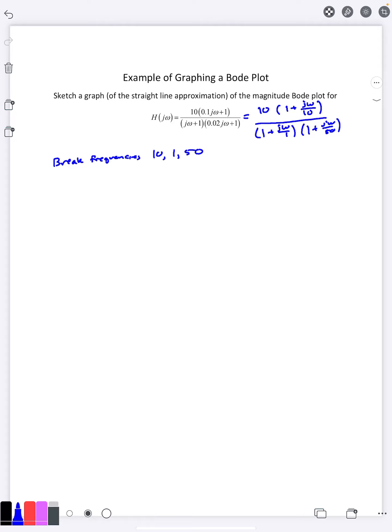So if I look at each term individually, if I have just 20 log of k, in this case 10 here, well log of 10 is 1 times 20 is 20. So the Bode plot for the first one here is just going to be a nice horizontal line at 20.